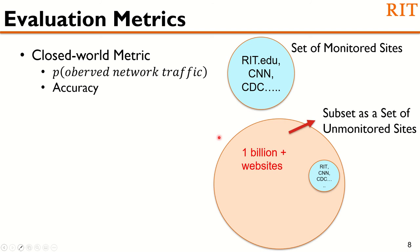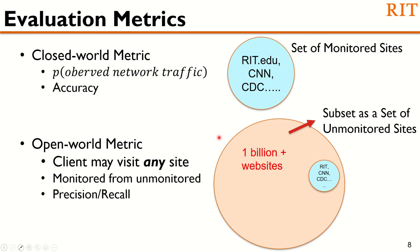However, this metric is not realistic, as there are more than 1 billion sites on the web and a client may visit any of these sites. Which is why we also evaluate the website fingerprinting attack in an open-world setting. Closed-world metric provides confidence on the classifier to perform open-world experiments. The sites which do not belong to the monitored sites are called unmonitored sites, and in this setting we use precision and recall to measure performance.